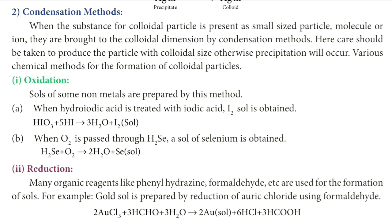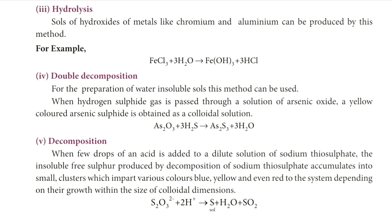The condensation method is classified into many kinds: oxidation, reduction, double decomposition, decomposition, and so on. By oxidation — when hydroiodic acid is treated with iodic acid, iodine is produced. By reduction — gold solution is prepared by reducing auric chloride using formaldehyde; that is an example of the reduction method.